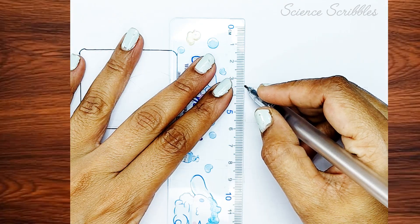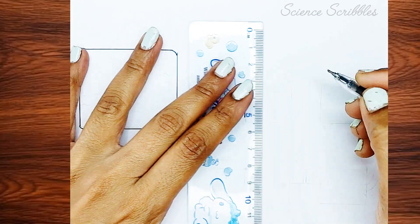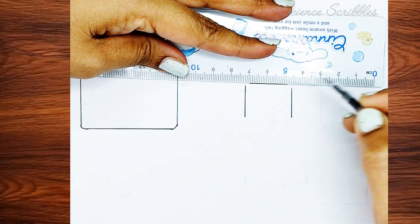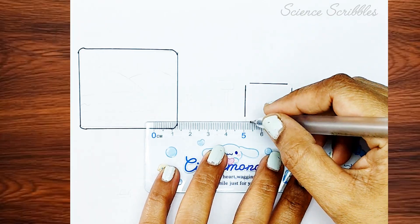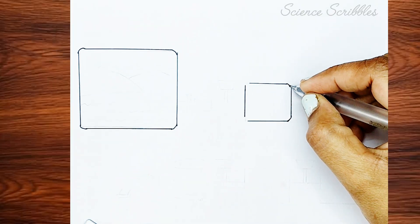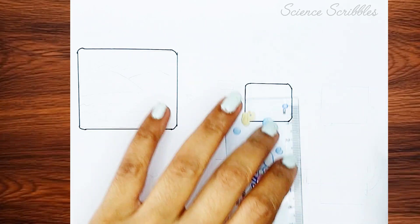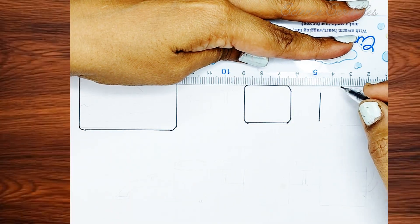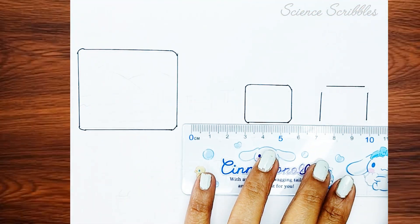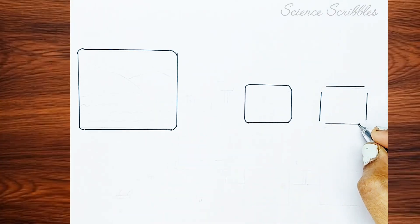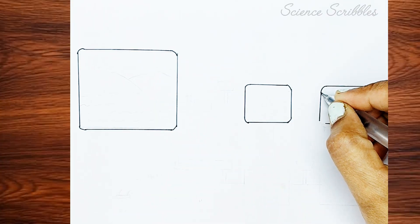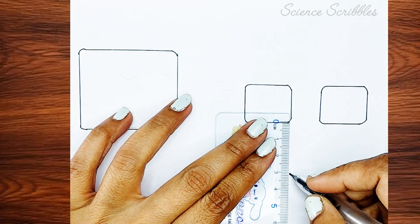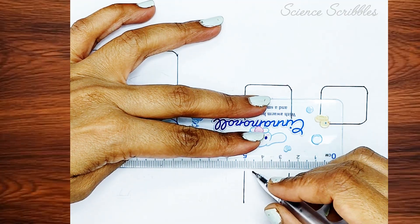Then, draw four smaller rectangles. Make sure the corners of all these rectangles are slightly curved instead of sharp. Next, draw two more rectangles below the ones you just created. Keep following along as we complete the drawing step by step.